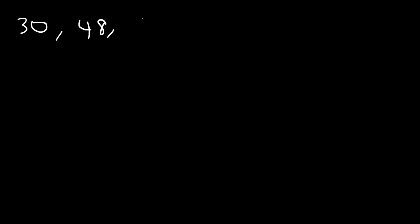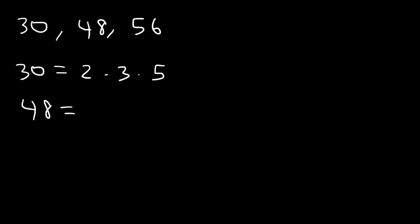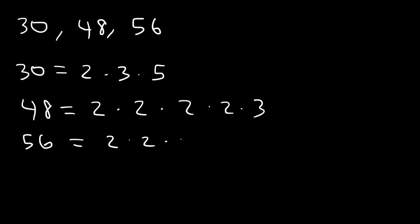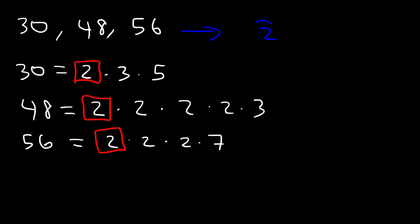Now, what about 30, 48, and 56? What is the greatest common factor between those three numbers? 30 is 5 times 6, and 6 is 2 times 3 — so that's the prime factorization of 30. The prime factorization of 48: it's 2 times 24, and 24 is 2 times 12, and 12 is 2 times 6, and 6 is 2 times 3. 56 is 2 times 28, 28 is 2 times 14, and 14 is 2 times 7. Now, all three numbers contain at least one 2. Not all of them contain a 3 — 56 doesn't have a 3. And not all of them contain a 5 or a 7. So, the GCF is simply 2.